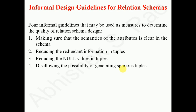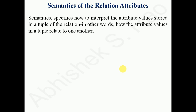First, let's see how we can make sure that the semantics of the attributes is clear in the schema. Semantics specifies how to interpret the attribute value stored in a tuple of the relation, and how attribute values in a tuple relate to each other. For example, consider a relation called 'employee' with attributes like employee ID, employee name, employee age, and employee address.